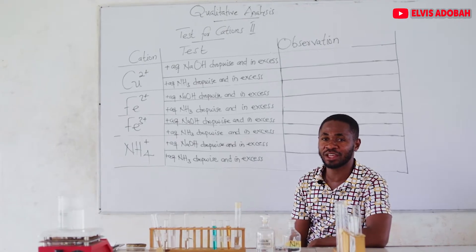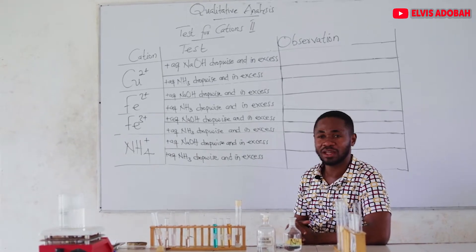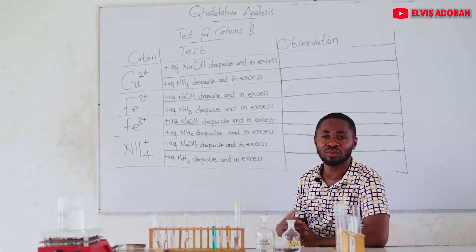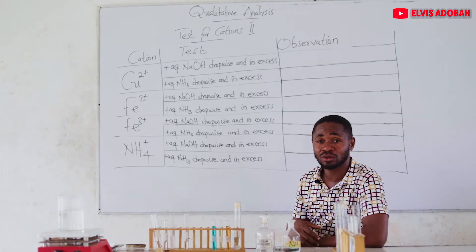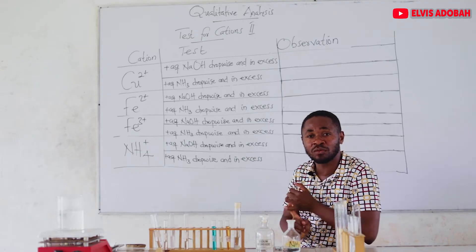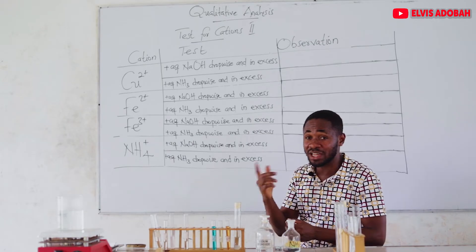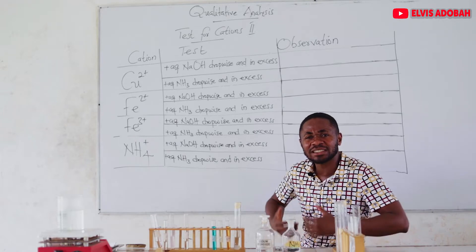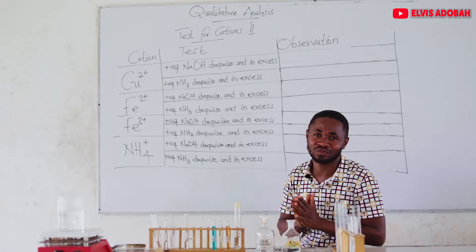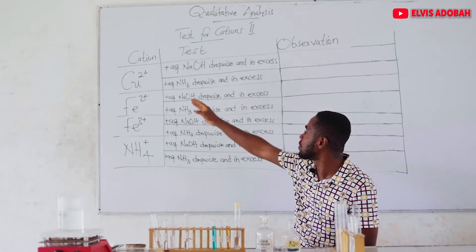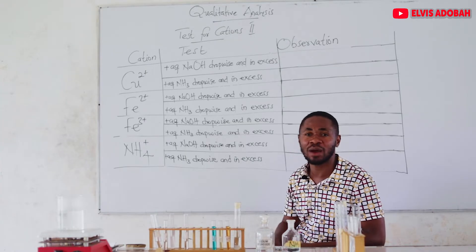Welcome students to Chem Estride. In our previous video, we discussed four cations and how to test for them using aqueous ammonia and aqueous sodium hydroxide. We learned that in tests for cations, what we are interested in is whether a precipitate will be formed or not, and if so, what is the color, what is the nature, and when we add excess of the reagent, will the precipitate stay or dissolve? Today we are going to continue with the remaining four cations: copper 2+, iron 2+, iron 3+, and ammonium ion.